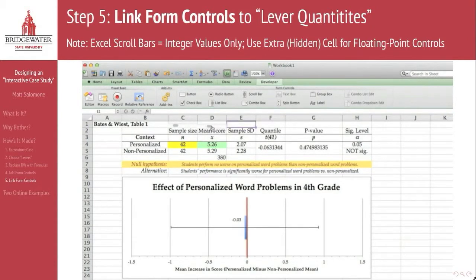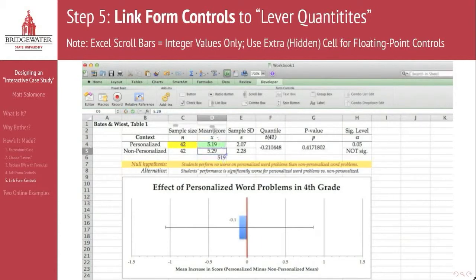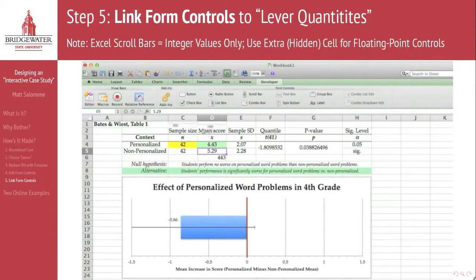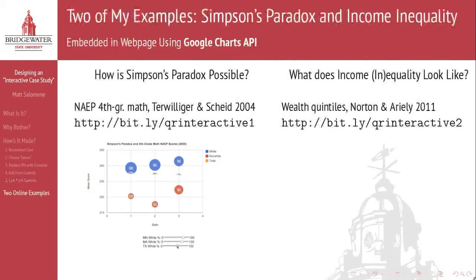It's worth noting that by default scroll bars can only change by integer values — whole numbers. If I want to affect a non-whole number quantity like the mean score, I should create an extra cell to contain an integer value that I then scale back. Here, because I want my mean score cell to count by .01s, I'll just create an integer value that I then divide by 100 and have the slider control that integer value. So now I can vary the mean score by intervals of .01, and because this is a fully interactive case study, everything — including the conclusions of the study — changes when we vary the sample size and when we vary the mean score.